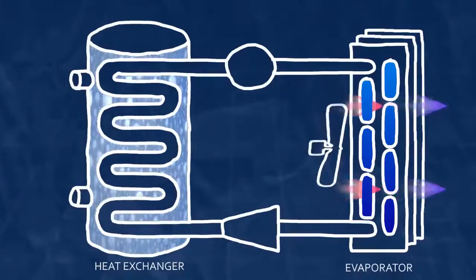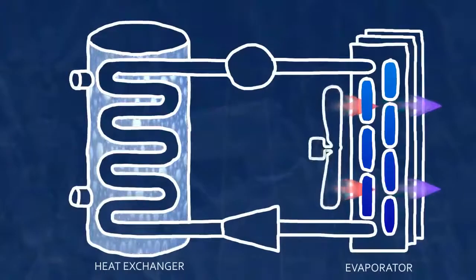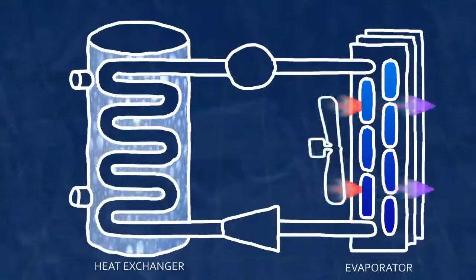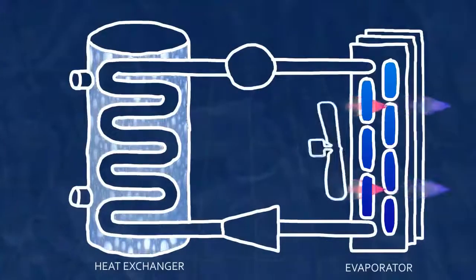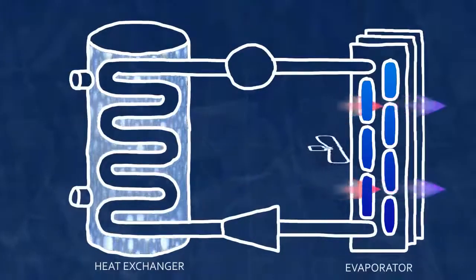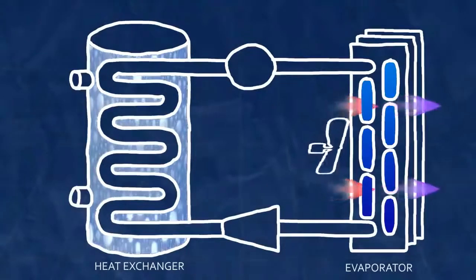The heat added to the refrigerant causes its temperature to rise and the fluid to become a warm, low pressure vapor. As the refrigerant changes from a liquid to gas, large amounts of energy transfer take place.